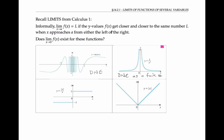In the third example, the limit does not exist, because as we approach zero from the left the y values equal one, and from the right they equal a different value, so the limits don't match and the limit doesn't exist. In the last case, the limit does exist — the limit as x goes to zero of f of x is zero, because as x approaches zero from both sides, the y values head towards zero.